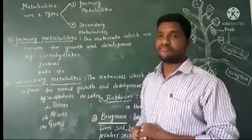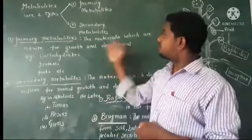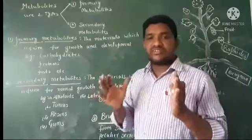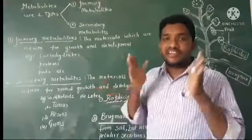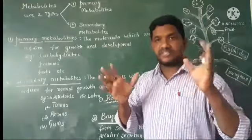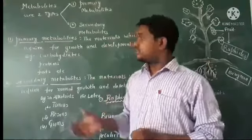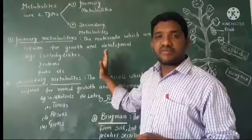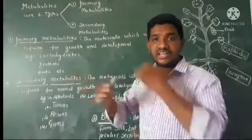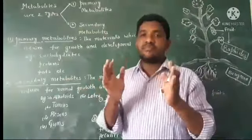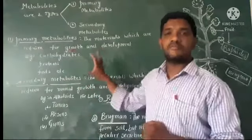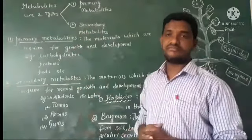Primary metabolites are the molecules which are required for growth and development of an organism. Examples include carbohydrates, proteins, and fats. These are all involved in growth and development, so they are called primary metabolites.